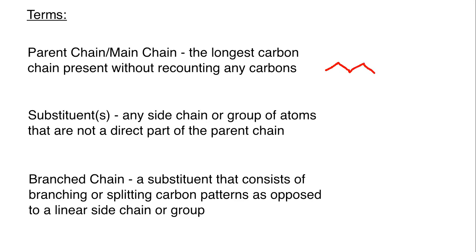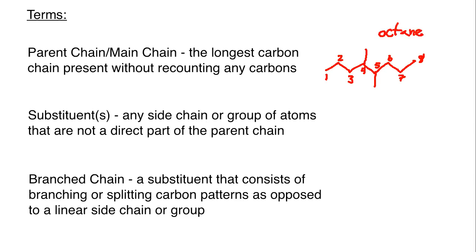Let me give a brief example. If we draw a carbon chain with some methyl groups hanging off, the longest part of the chain is the centerpiece — counting 1, 2, 3, 4, 5, 6, 7, 8. So our main parent chain is 8 carbons long and would be considered an octane. I could not count 1, 2, 3, 4, then go up to a methyl and say 5, then come back down and say 6, because I already counted that carbon as 4. You can only go in one direction once you've picked it, without recounting any carbons.